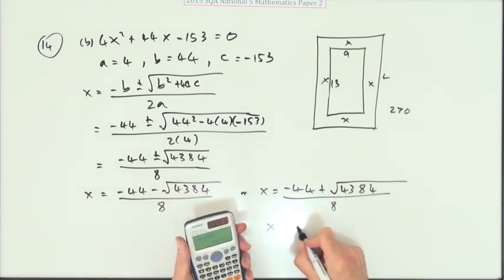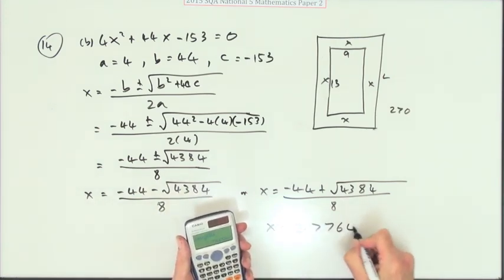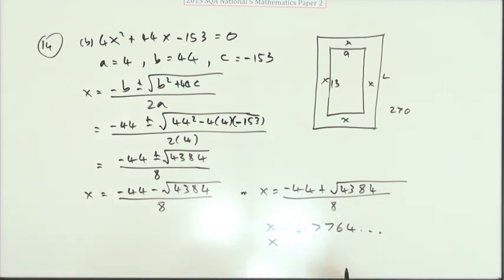And you get X is equal to 2.7764 and so on. And it said to one decimal place. Yes. So X is 2.8 centimetres.